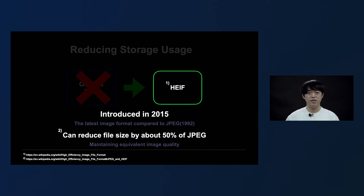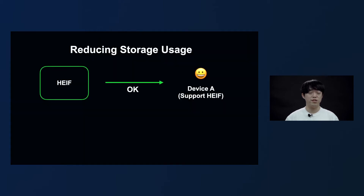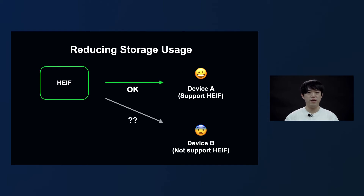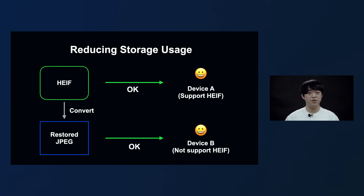For reference, because HEIF has better compression efficiency compared to JPEG, more and more devices support HEIF. So only HEIF files remain in storage. In the case of device A, which supports HEIF, the image can be viewed normally. But in the case of device B, which does not support HEIF, the image cannot be viewed normally. So for device B, Antman provides a function to restore the HEIF file back to a JPEG file.